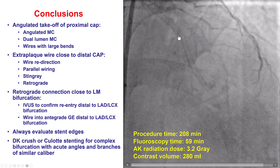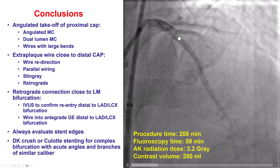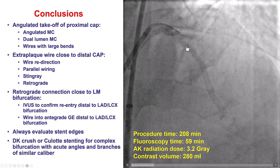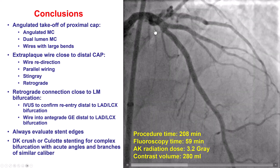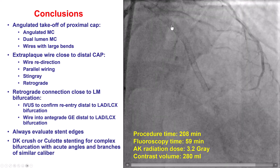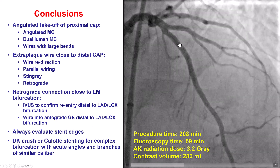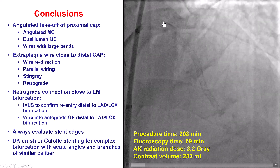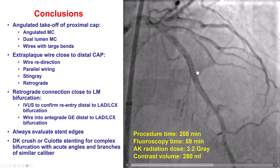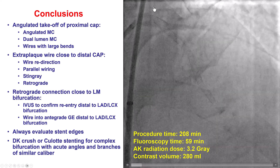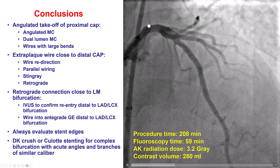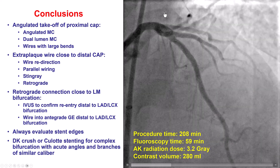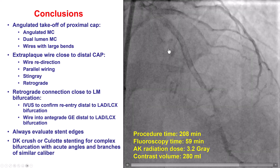When we did the retrograde crossing, it was actually easy crossing from the distal true lumen to the proximal true lumen. But before placing stents, we need to confirm that there is no re-entry close to the left main — because if the retrograde wire had re-entered into the true lumen close to the left main bifurcation, that could result in loss of multiple branches, including the circumflex.